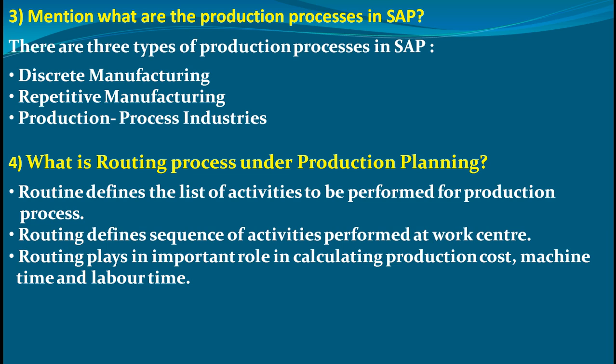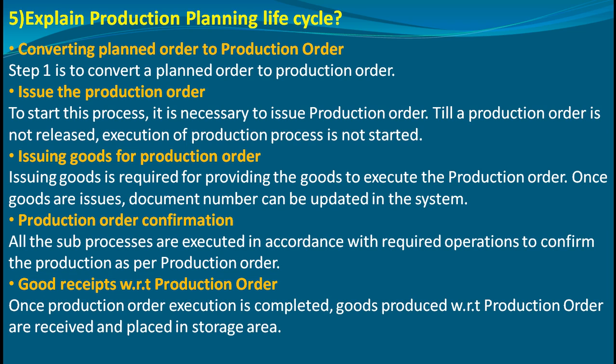There are three kinds of production processes in SAP: discrete manufacturing, repetitive manufacturing, and production process industries. Regarding the routing process under production planning, routing defines the list of activities to be performed for any production process, which are cyclic in nature — they never exhaust and keep happening one after another. Routing defines the sequence of activities performed at any work center and plays a very important role in calculating production cost, machine time, labor time, and many other parameters.